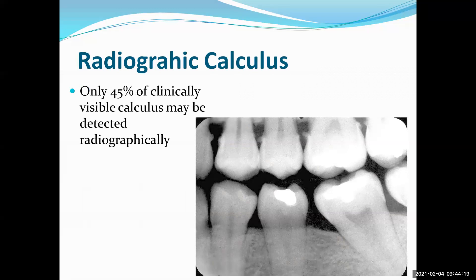Radiographic calculus: only 45% of clinically visible calculus may be detected radiographically — this is usually a test question. You can see calculus here, and you will have patients where it's not showing up on x-rays even though you've worked the entire hour. If you see calculus on the radiograph, you know there's more there than what you can see. So if I see this on the radiograph, I'm automatically thinking difficulty four.